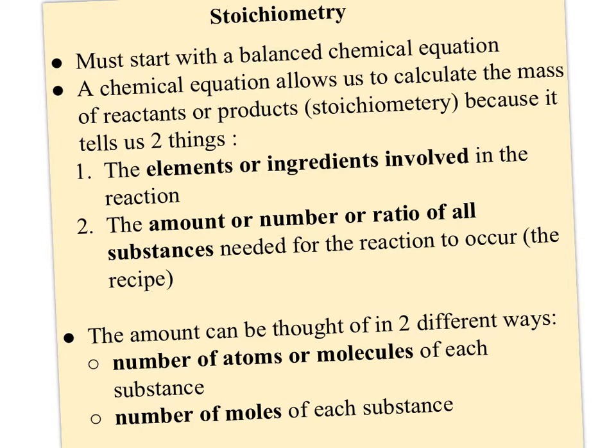The basics of stoichiometry is that you have to start with a balanced equation, and then that balanced equation allows you to calculate the mass of reactants or products because it's telling you two different things: it's telling you the elements or the ingredients involved in the reaction, and it's telling you the amount, the number, or the ratio of all the substances.